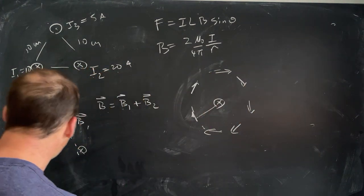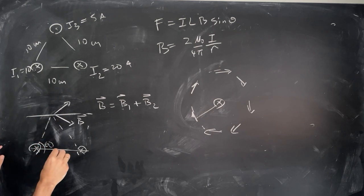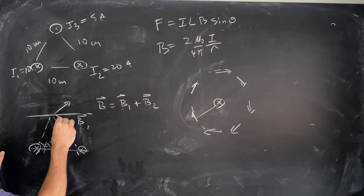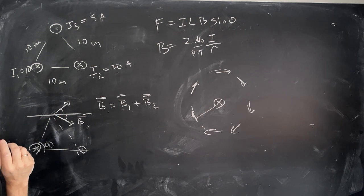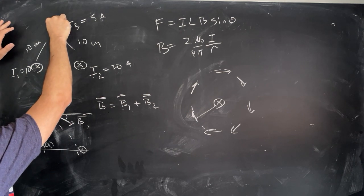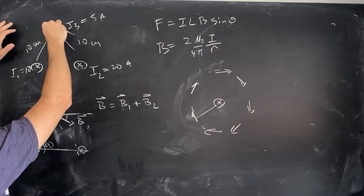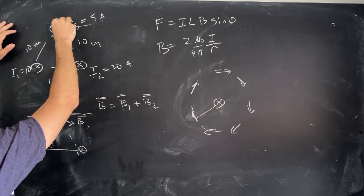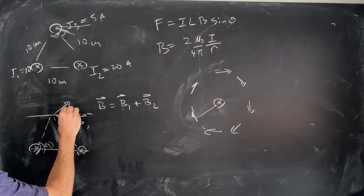Using that idea for these two wires: this wire is going to make a magnetic field — there's my R — that goes like that (B1), and this wire makes a magnetic field like that (B2). I can find the magnitudes and angles because this is an equilateral triangle, so this angle is 60 degrees, which means this angle here is 30 degrees and that one is also 30 degrees.